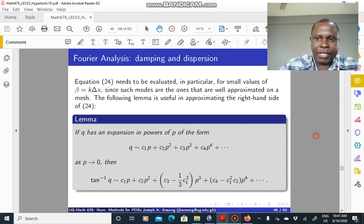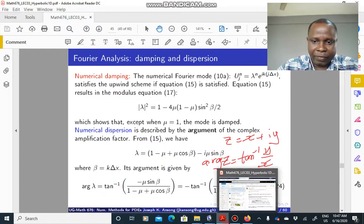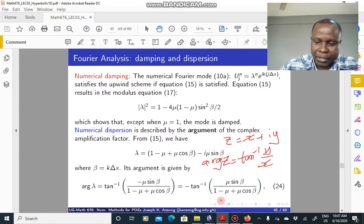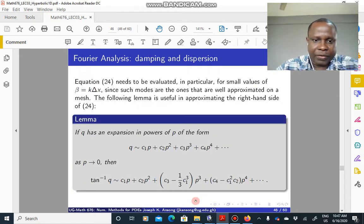We said we can look at dispersion from the argument of the complex amplification factor. We found this in equation 24, which is the argument of the amplification factor given by this. And now to be able to analyze it, we need to expand this, apply a lemma, and then look at the resulting expression.